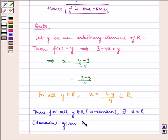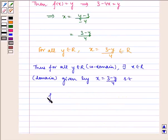given by x = (3 - y)/4, such that f(x) = f((3 - y)/4) = 3 - 4((3 - y)/4) = y.